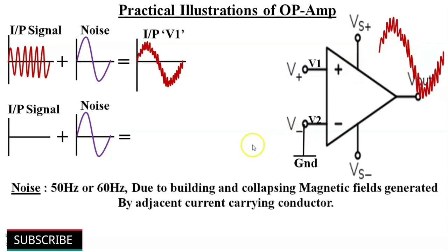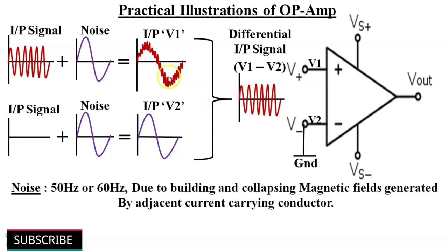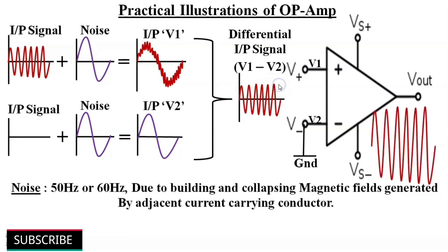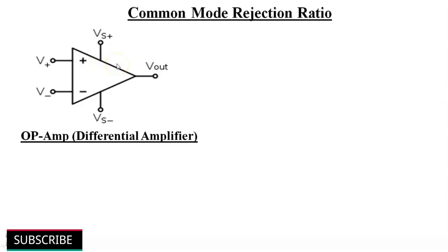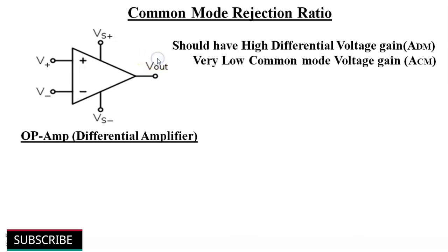However, the operational amplifier also has a second input V2, which has the same 50 Hz or 60 Hz noise. The noise components of the two inputs form a common mode signal, which is largely rejected by the differential amplifier. The differential input signal is V1 minus V2, so the noise in both inputs is subtracted from each other. The resultant input signal without any noise is amplified by the operational amplifier, and the amplified output is also free from noise. A differential amplifier should have high differential voltage gain ADM and very low common mode voltage gain ACM.